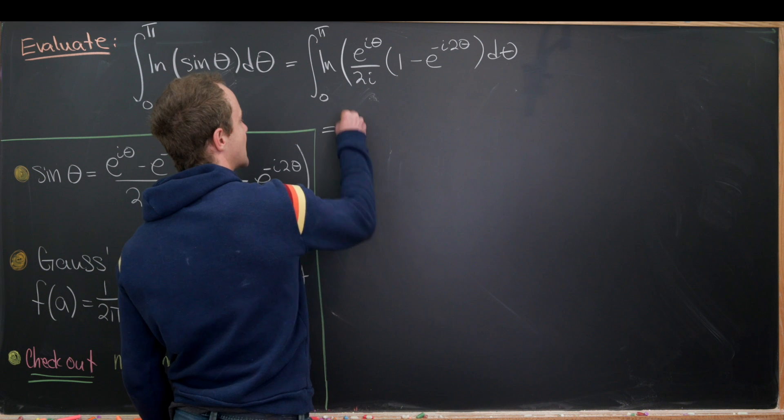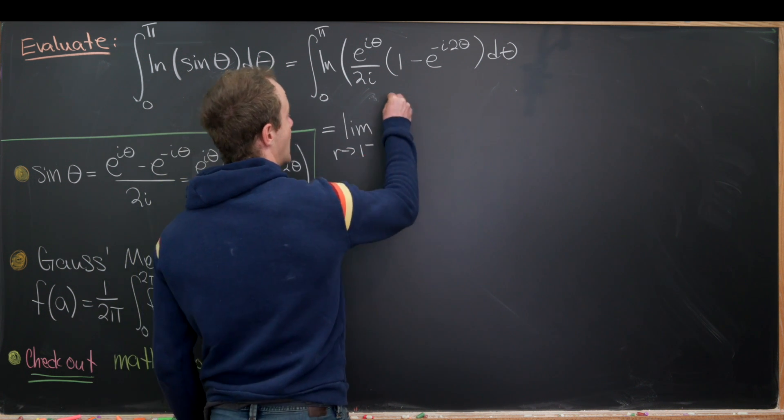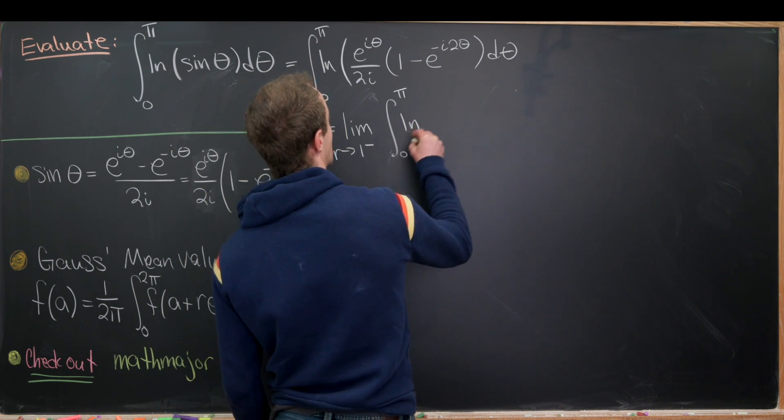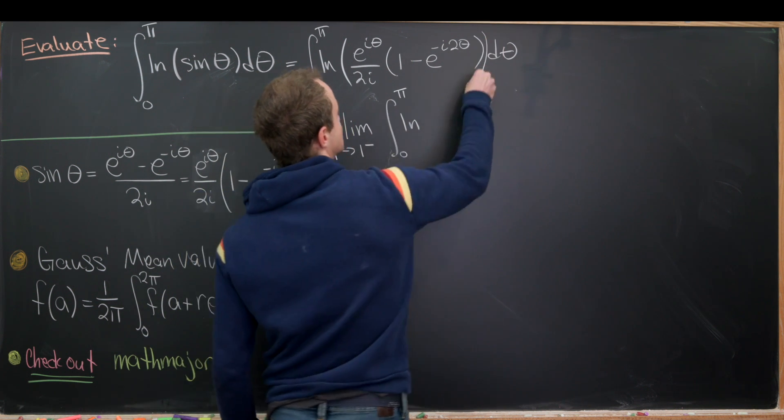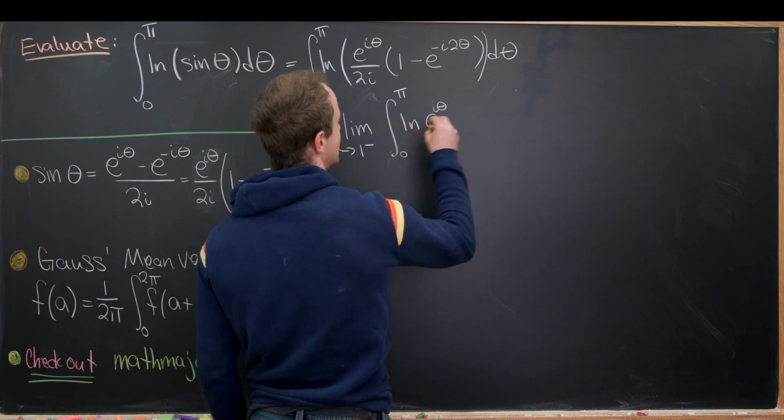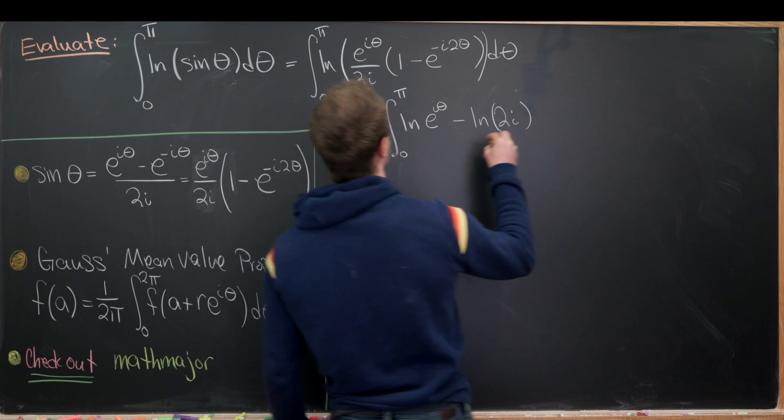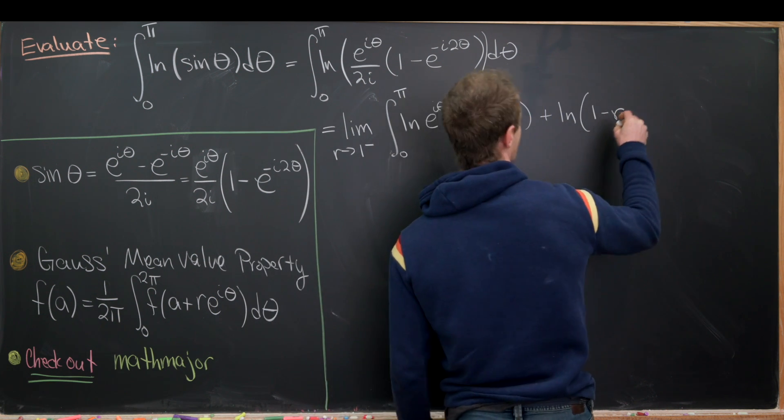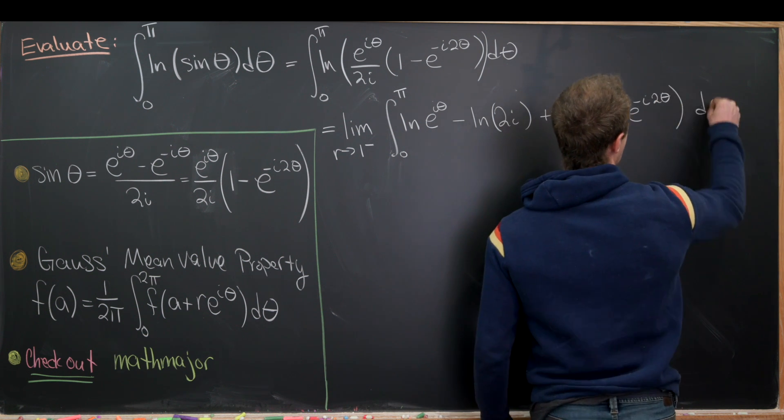So I'm going to write this as the limit as r goes to 1 from below of the integral from 0 to pi of the natural log of. And then while we're at it, we'll split this up using natural logarithm rules. So let's see. That gives me the natural log of e to the i theta. And then that's going to be minus the natural log of 2i. And then finally, that'll be plus the natural log of 1 minus r times e to the minus i times 2 theta. And then d theta.